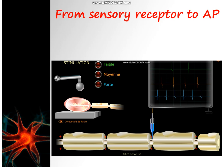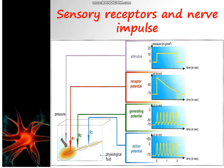But why does the frequency of action potentials vary with the variation of the intensity of stimulation? This next document shows an experiment during which we stimulate the Pacini corpuscle with increasing pressures. Using different oscilloscopes, we measure the receptor potential using electrode R1, the generating potential — which is the nerve message just at its exit from the receptor — using R2, and the nerve message passing through the nerve fiber using electrode R3.